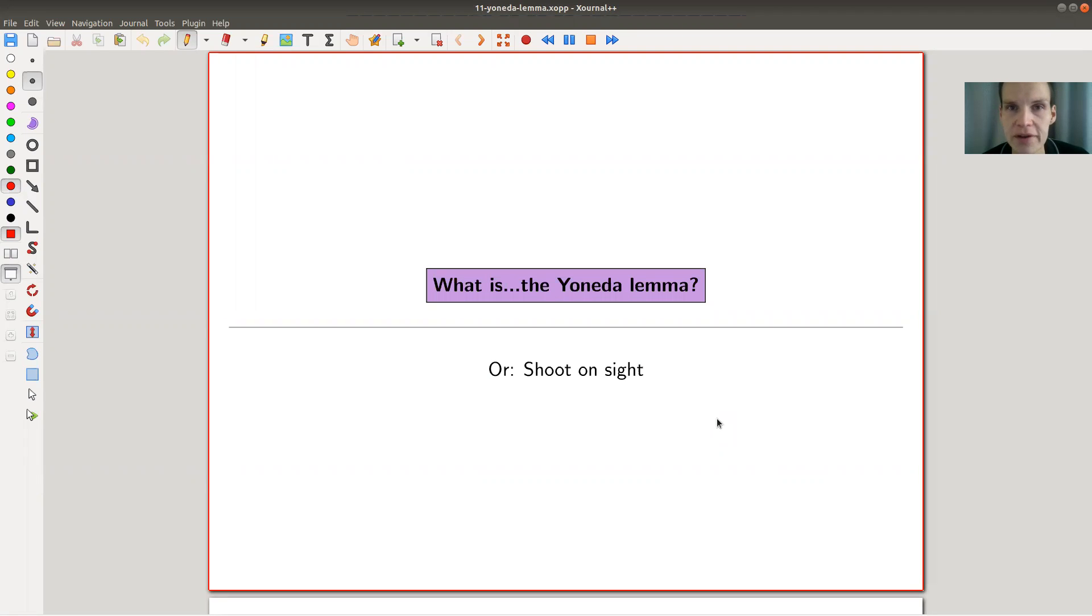Welcome everyone to my continuation of what is category theory. Today I would like to tell you about the Yoneda Lemma, or Yoneda Embedding, whatever you want to call it, kind of really one of the cornerstones of classical category theory. It's not so easy to explain, I'm trying to do my best. In some sense, if you understand the question, you will understand the proof. I'm not going to show you the proof anyway. So it's a little bit tricky to explain, and I'm definitely a brute. Sorry for that, by the way.